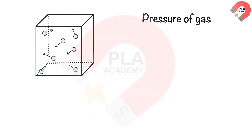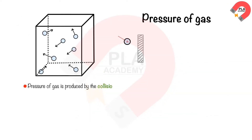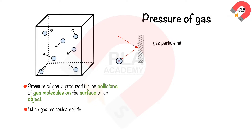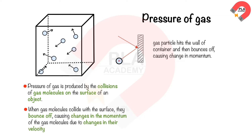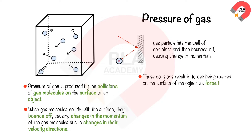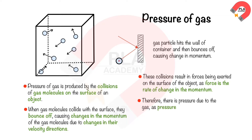Pressure of gases. Pressure of gas is produced by the collisions of gas molecules on the surface of an object. When gas molecules collide with the surface, they bounce off, causing changes in the momentum of the gas molecules due to changes in their velocity directions. These collisions result in forces being exerted on the surface, as force is the rate of change in momentum. Therefore, there is pressure due to the gas, as pressure is defined as the force per unit area.